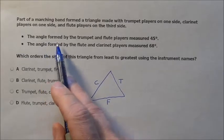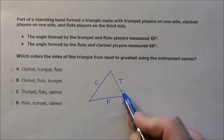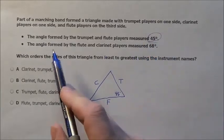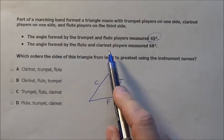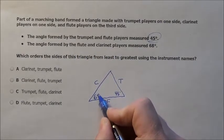Now let's look at what angles are formed. The angle formed by the trumpet and the flute, so this angle right here is 45 degrees, that's what it says right here, measured 45 degrees. The angle formed by the flute and clarinet, flute and clarinet is 68 degrees.